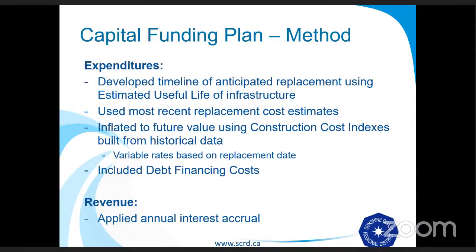The method we took — a broad strokes explanation of what we did to come up with this capital funding plan: we looked at the expenditures we had coming up. We developed a timeline of anticipated replacement using the estimated useful life of the infrastructure. Where possible, we used the most recent similar cost estimates. We inflated the values to the future value using the construction cost indices shown before. And where we anticipated borrowing money to complete the construction, we included debt financing costs. On the other side of the ledger, as we anticipated a reserve to be built up, we applied the annual interest that would be accrued from that.